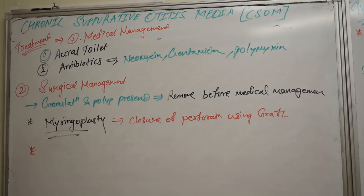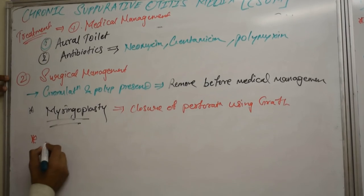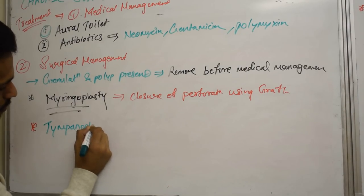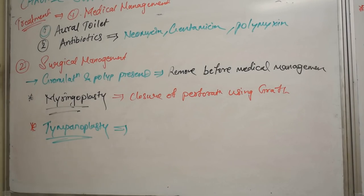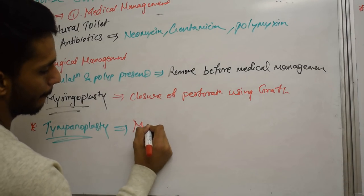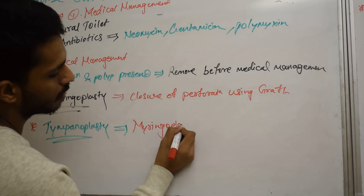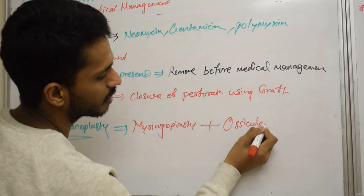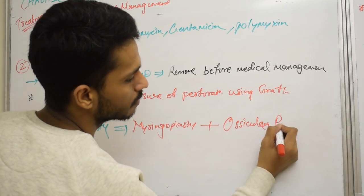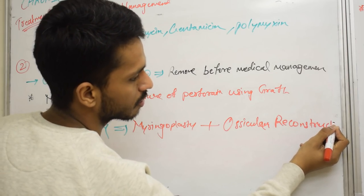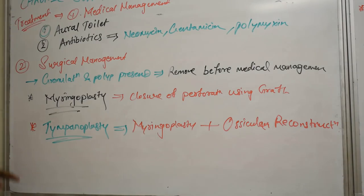If the condition is not treated with medical management, we go for surgical management. If there is granulation or polyps in the external auditory canal, we will remove them surgically before medical management — this helps antibiotics reach the proper place and allows easier cleaning of the canal. Further, we will do myringoplasty — that is closure of the perforation using a graft. If the ossicular chain is intact and mobile, myringoplasty alone is done. But if the ossicular chain is destroyed, we go for tympanoplasty — which is myringoplasty along with ossicular reconstruction.